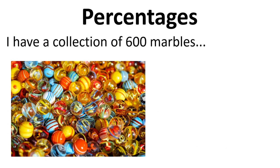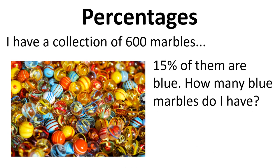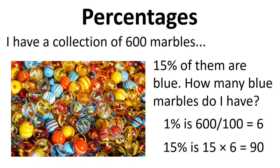So let's take the example of six hundred marbles. Fifteen percent of them are blue. So how many actual marbles are blue? So one percent of that is six hundred divided by a hundred is six. So six marbles represents one percent of the collection. Fifteen times six is ninety. So ninety marbles are blue. That's fifteen percent of the six hundred.